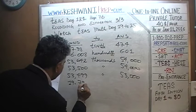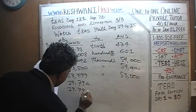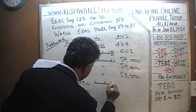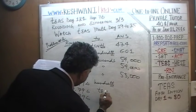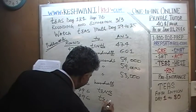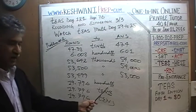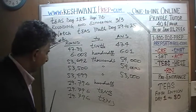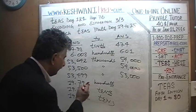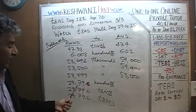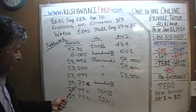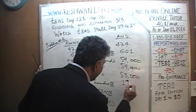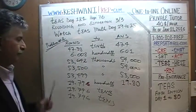19.796, rounded to the nearest hundredth. The hundredths digit is 9, and after that we have a 6 in the thousandths place. Since 6 is more than or equal to 5, the 9 is going to become 10, and when 9 becomes 10, the tenths digit 7 is going to become 8. So rounding 19.796 to the nearest hundredth gives 19.80.